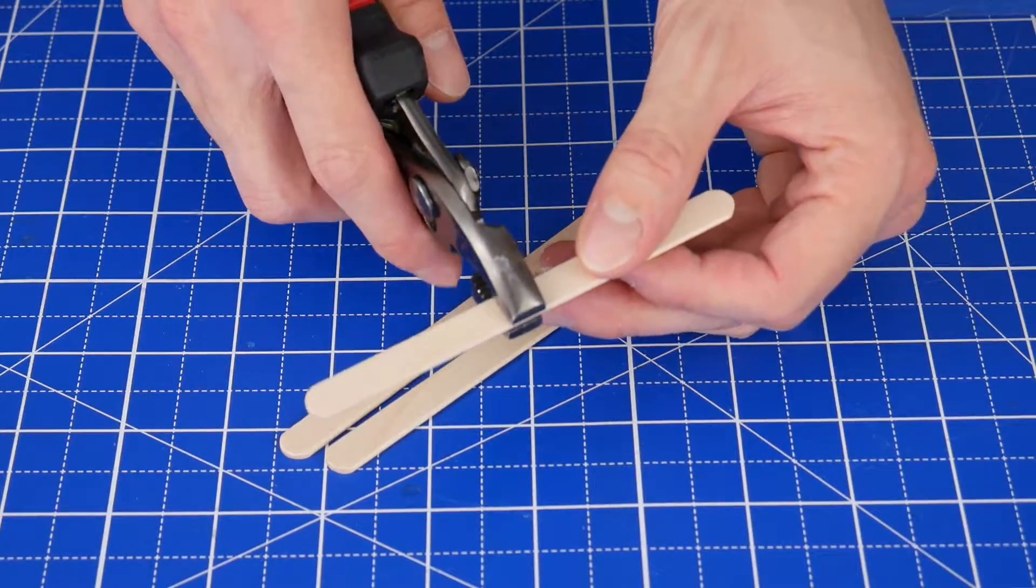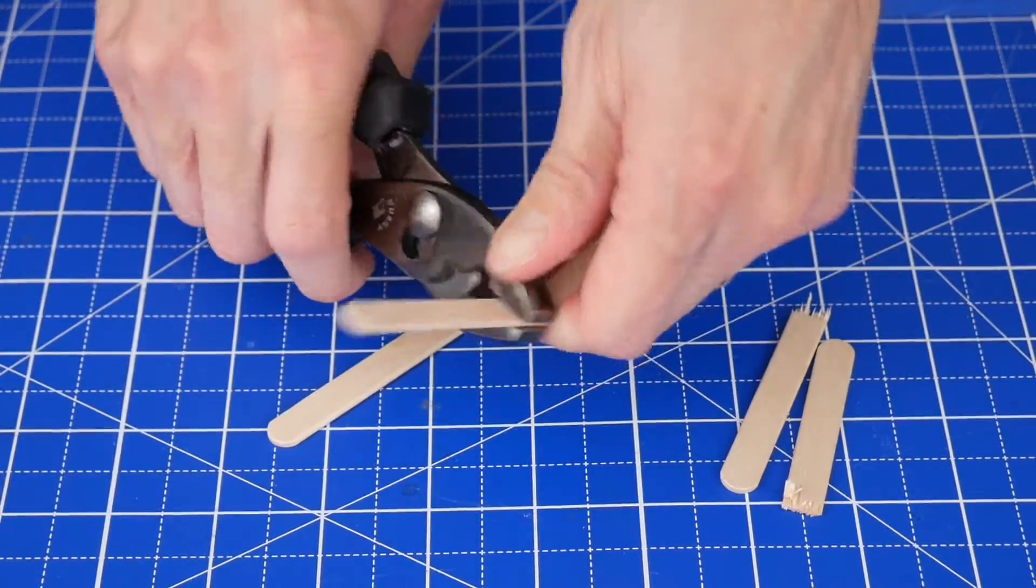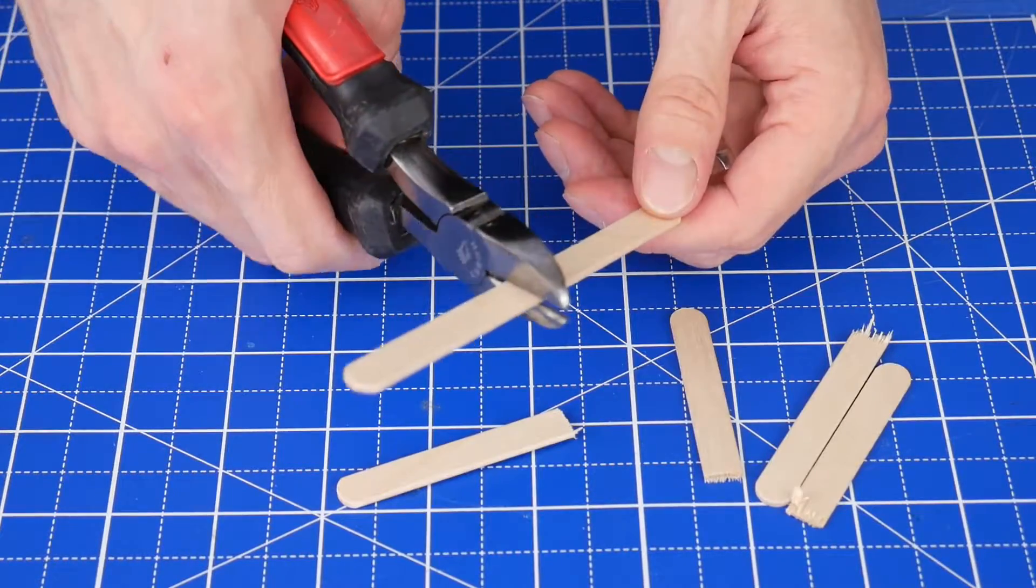First, cut or break three craft sticks in half. You can do this with a pair of pliers or by cutting with a pair of wire cutters.